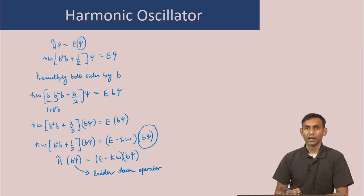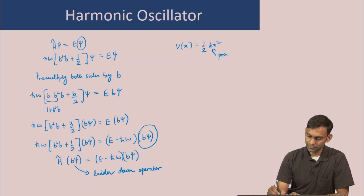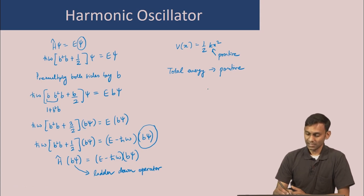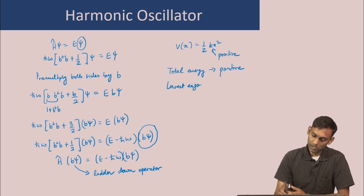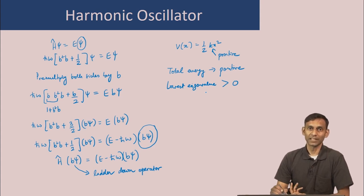For a harmonic oscillator with potential energy V(x) = ½kx², where k is positive, the total energy is positive. This implies the lowest eigenvalue of the Hamiltonian must be greater than zero, so the eigenvalues have a lower bound and all values are greater than that lower bound.